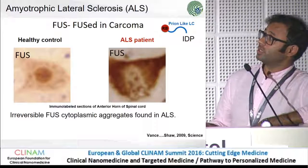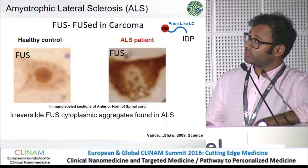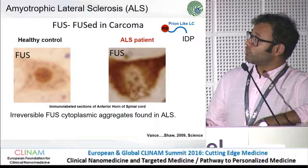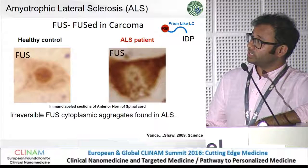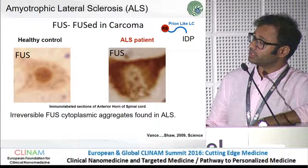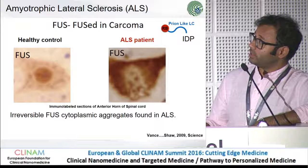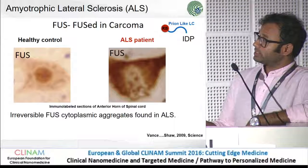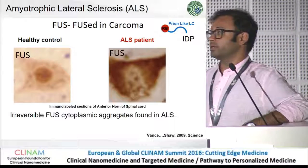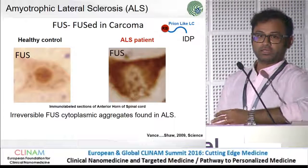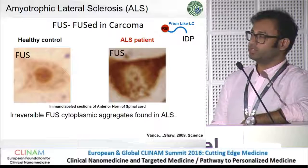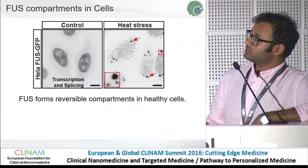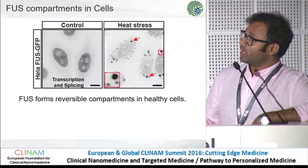In order to test these two hypotheses, we chose amyotrophic lateral sclerosis as our disease model. The reason we chose this is that a protein called FUS — fused in sarcoma — which is a classical IDP, has been shown to form aggregates in ALS patients. In a normal state, it's localized in the nucleus, as you can see here in this histopathological slice. But in a disease patient, there is nothing inside the nucleus — everything is outside in the cytoplasm in the form of aggregates. We made cells expressing FUS tagged by the fluorophore GFP.